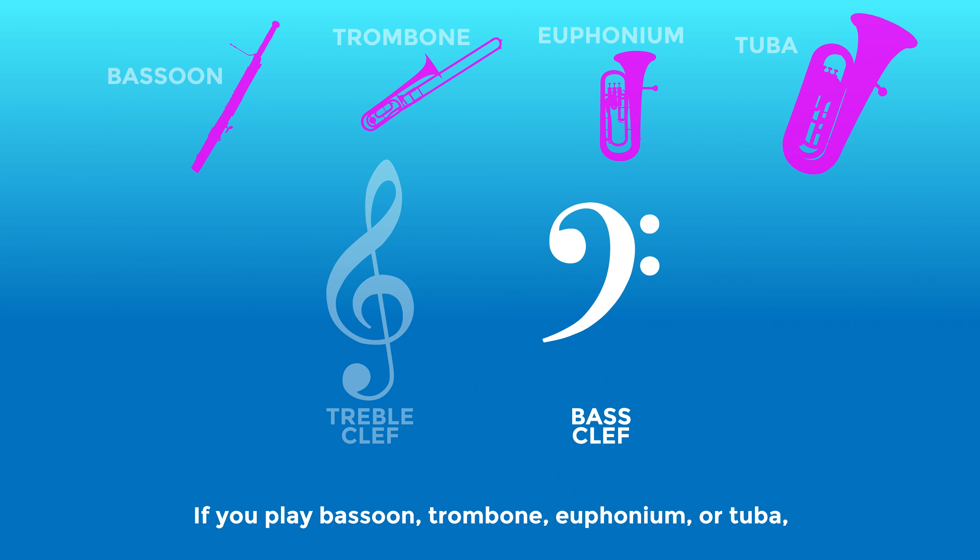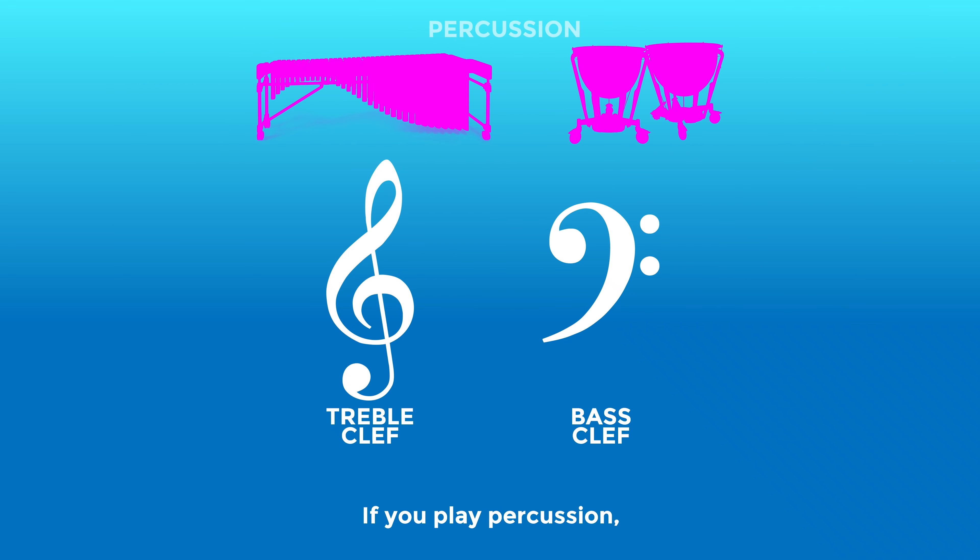If you play bassoon, trombone, euphonium or tuba, you'll read music in bass clef. And if you play percussion, you'll read music in treble and bass clef.